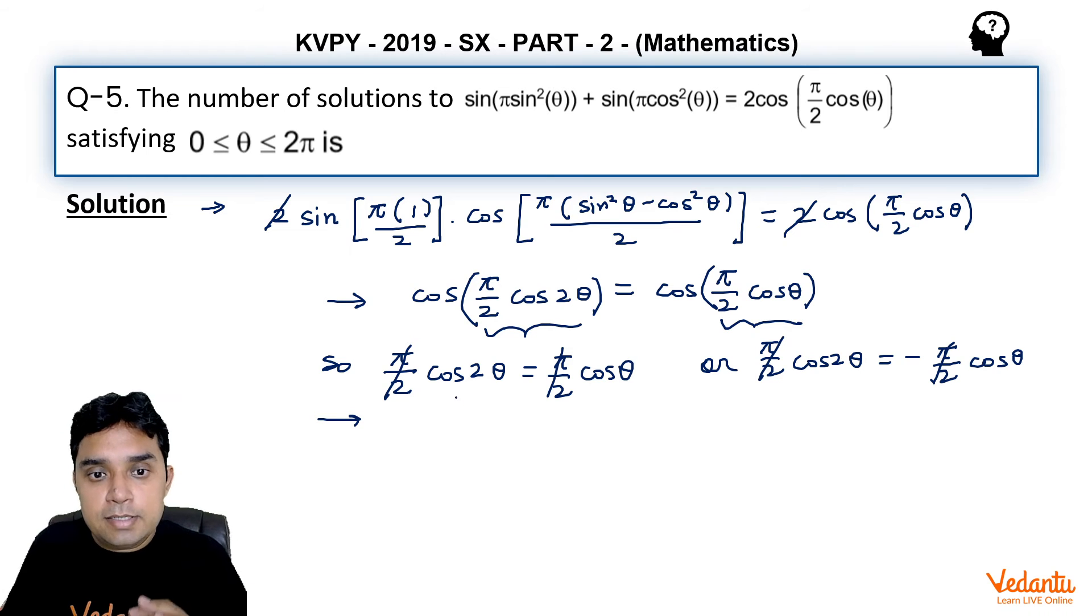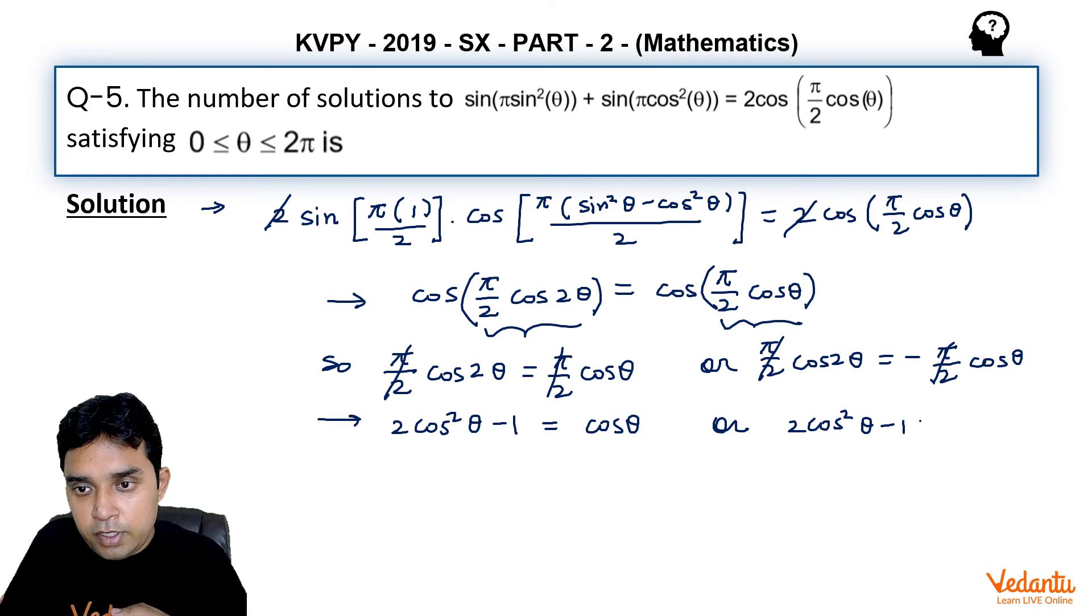Here I will use that result cos 2θ as 2cos²θ - 1, and this will be equal to cosθ. Or we will have 2cos²θ - 1 equal to -cosθ.